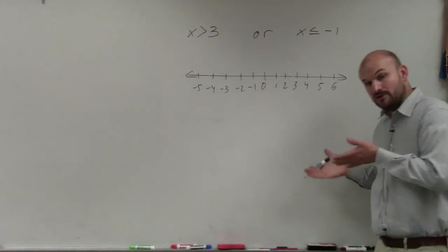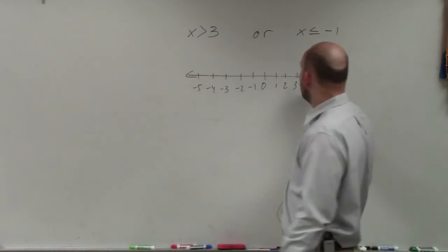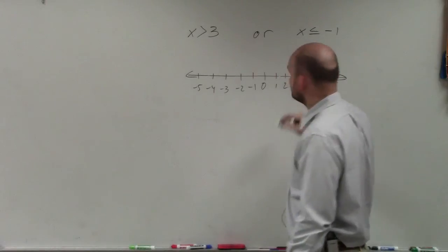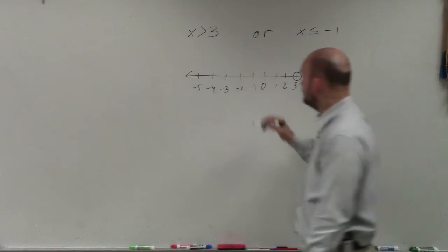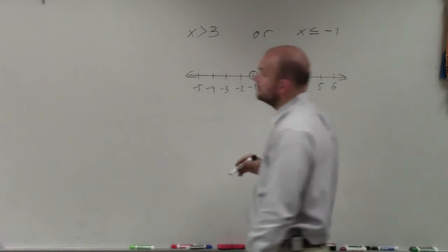So at each point, we're going to create a circle. So I have x is greater than 3. And then I have x is less than or equal to negative 1. All right?